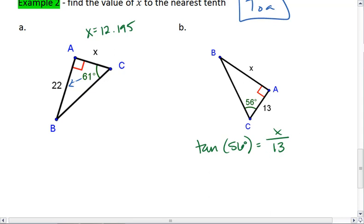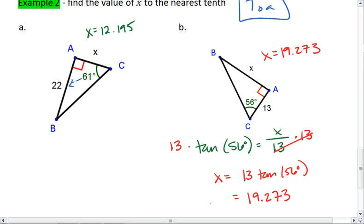And realize that if we multiply both sides by 13, we get x equals 13 times tan of 56. And then just plug that entire equation, 13 times tan of 56, into your calculator. We should end up with 19.273. So x equals 19.273 in this example.